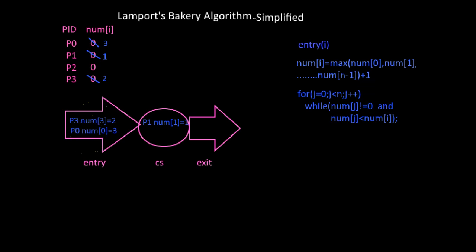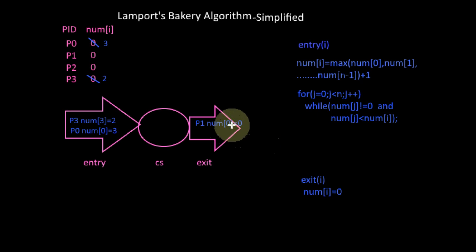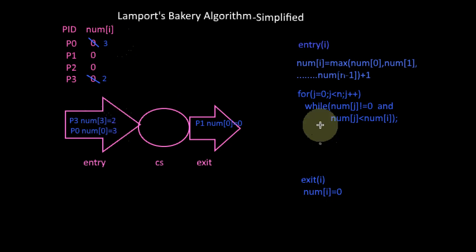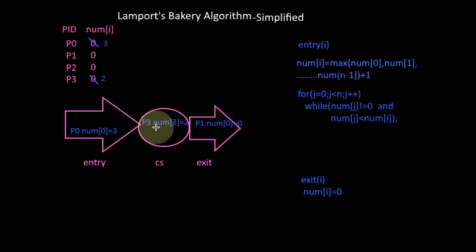In the exit code, the number will be reset back to zero. Let P1 complete its critical section — it will reset its number to zero. Now P3, who is waiting, finds the loop condition breaks. There is no process whose number is not equal to zero and lower than P3's token number, so P3 can break the while loop and enter the critical section. P0 must still wait for P3 to complete.